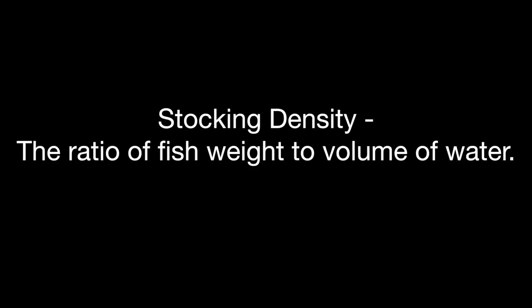The next term is stocking density, defined as the ratio of fish weight to volume of water. All it refers to is the amount of fish weight you have in relation to the amount of water the fish are raised in. For example, half a pound of fish in one gallon of water equals a stocking density of half a pound per gallon. It's usually expressed in pounds per gallon or kilograms per cubic meter.